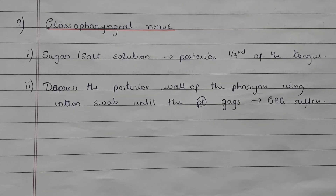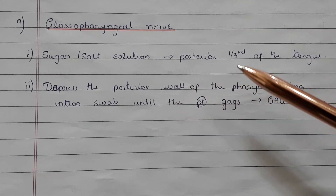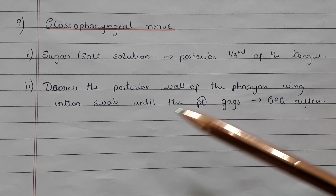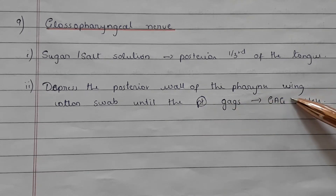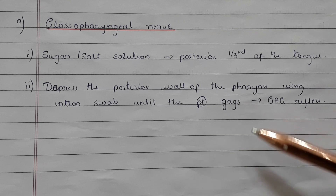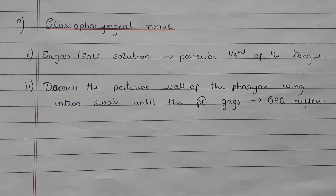The ninth cranial nerve is the glossopharyngeal nerve, which is also a mixed nerve. You can use sugar or salt solution over the posterior one-third of the tongue. Also, depress the posterior wall of the pharynx using a cotton swab until the patient gags — this is to check the gag reflex. Usually, the ninth and the tenth cranial nerves — the glossopharyngeal and the vagus — are clubbed together.